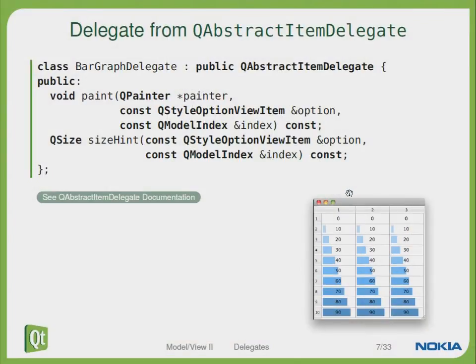But when you would like to implement some fancy things like we see here, you can create your own delegate. Deriving your delegate from QAbstractDelegate can paint, for example, a progress bar with some progress information in each and every cell of your table. Therefore you just have to overwrite your paint function and of course the size hint, to tell the table about the size of each and every element.